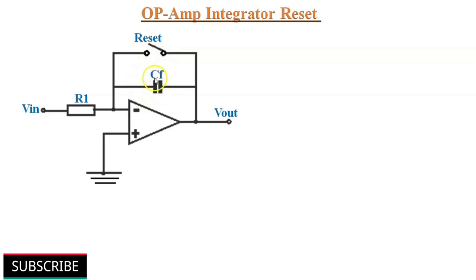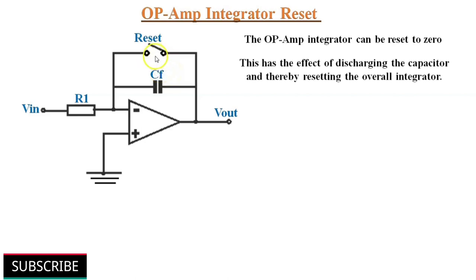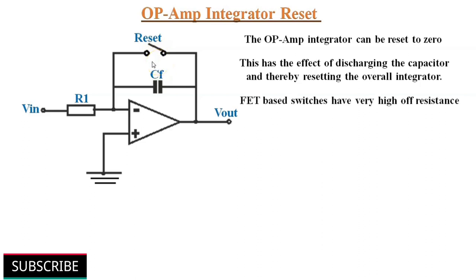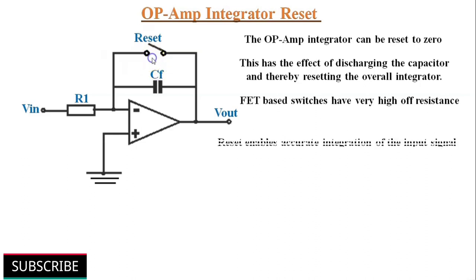It is sometimes necessary to reset the op-amp integrator to 0. The reset can be accomplished by simply adding a switch across the feedback capacitor, which has the effect of discharging the capacitor and thereby resetting the overall integrator. The reset switch can be a simple mechanical switch or semiconductor switch. Reset switches are typically FET-based switches because they have a very high off resistance and can be controlled easily in this type of application. This reset function enables the accurate integration of the input signal.